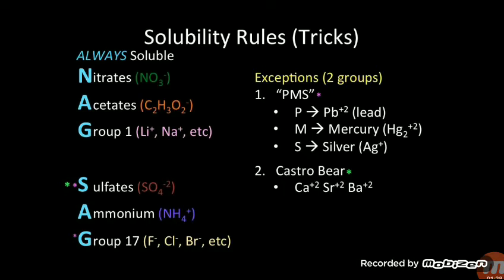Describing these asterisks: the magenta color asterisk is on sulfates and Group 17, and on the right side this asterisk defines the exceptions. If these elements form a compound with sulfates or Group 17, they are not going to be soluble in water. You can learn these exceptions by the word PMS: P represents lead (Pb²⁺), M represents mercury (Hg₂²⁺), and S represents silver (Ag⁺).